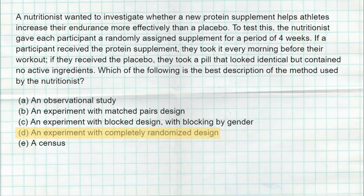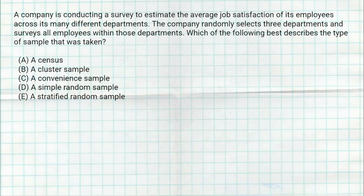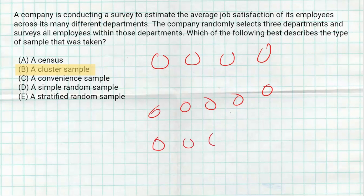Question 22: the correct answer is a cluster sample. A lot of kids get this one wrong — they think it's a stratified sample. There are many employees across many different departments, and in all these different departments we have a bunch of employees. The company randomly selects three departments. If they're not even selecting individuals but selecting three departments, that's the key. Every department gets a number, they randomly select three of those departments, and every employee in those departments becomes part of the sample. That's literally the definition of a cluster sample.